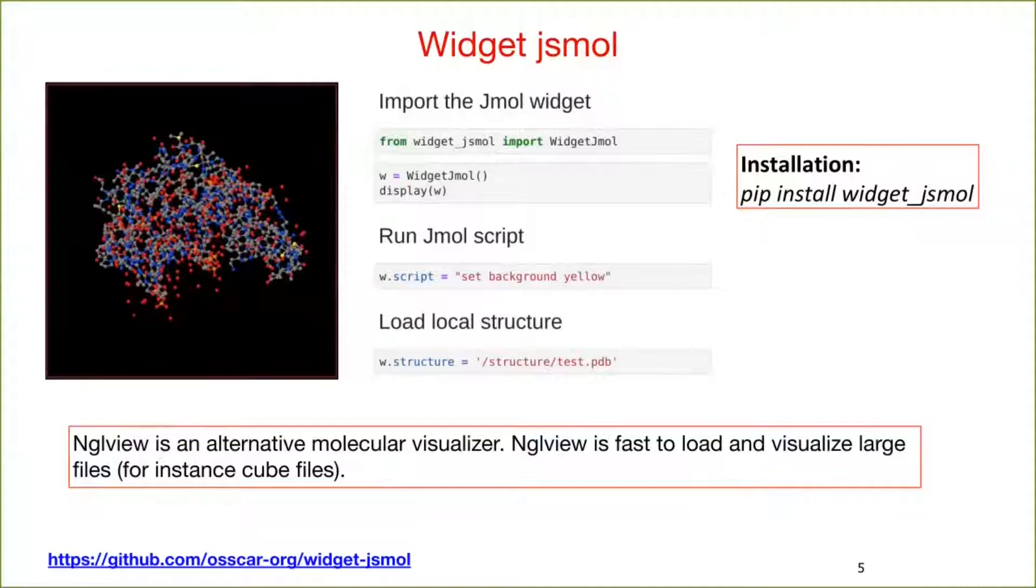The first is called widget jsmol. This widget wrapped the popular Jmol molecular visualizer, which made it possible to use the visualizer inside Jupyter notebooks. Jmol has a very powerful script language system. One can run the script by calling widget.script equal. Here set background yellow will change the background color to yellow. Load structure by using the structure variable. Install the widget by pip install widget underscore jsmol. We also use nglview as a molecule visualizer. Nglview is very fast to load large files. It can load a large cube file instantly without noticeable latency. You can check more information for this widget at our OSCAR GitHub repository.